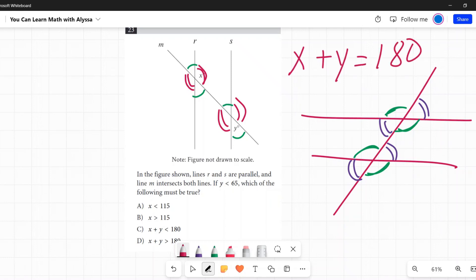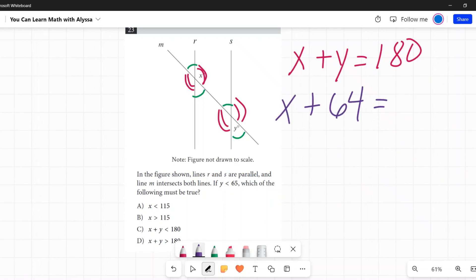y is less than 65, so let's pick a number less than 65. Let's say y is 64. What would x be? Well, let me subtract 64 from both sides, and x is going to be 116.